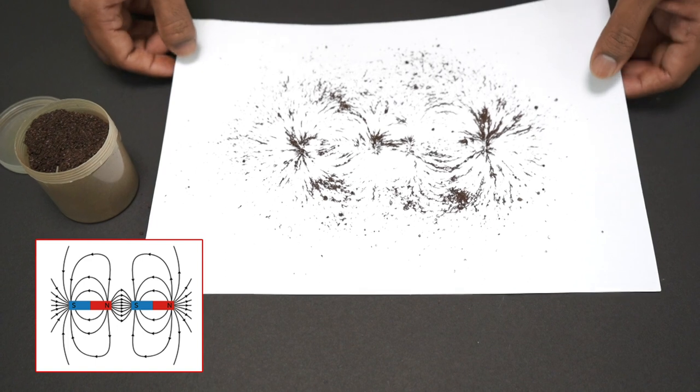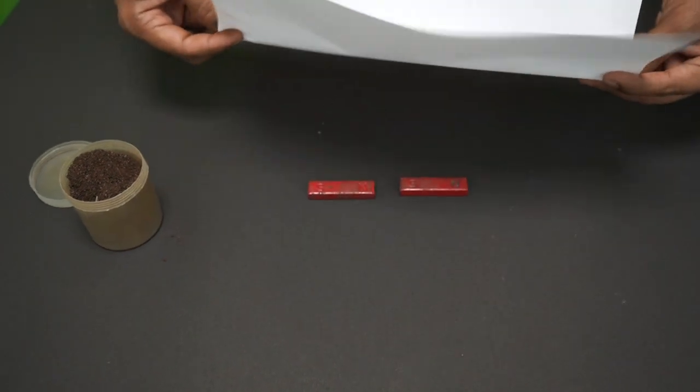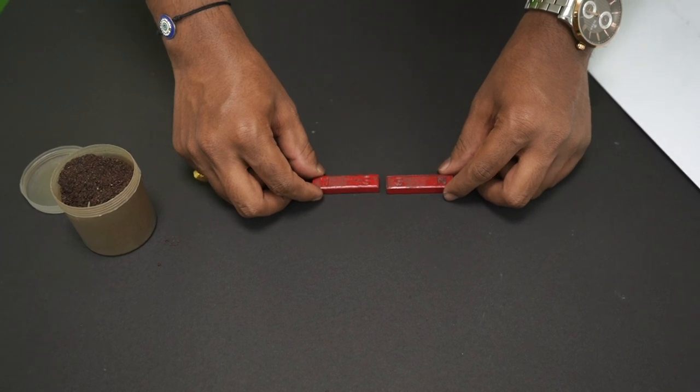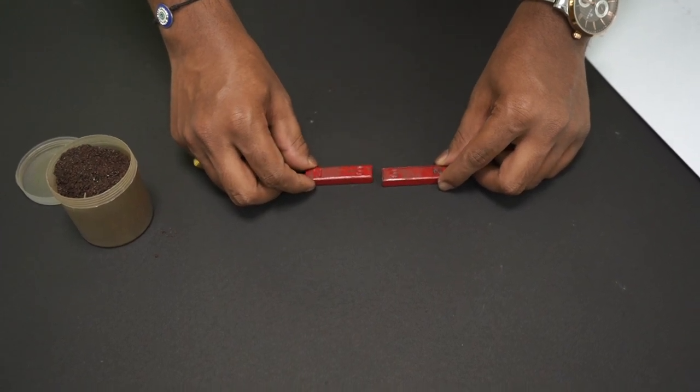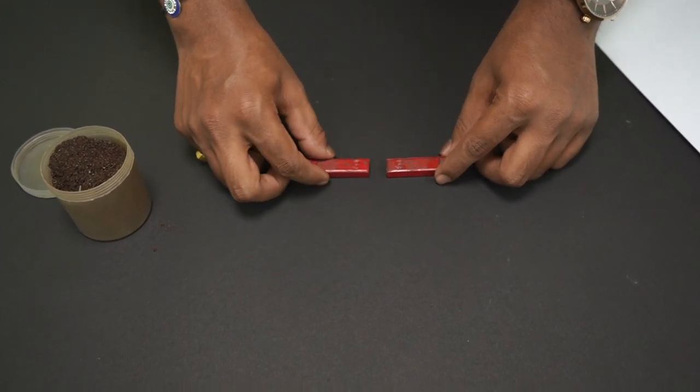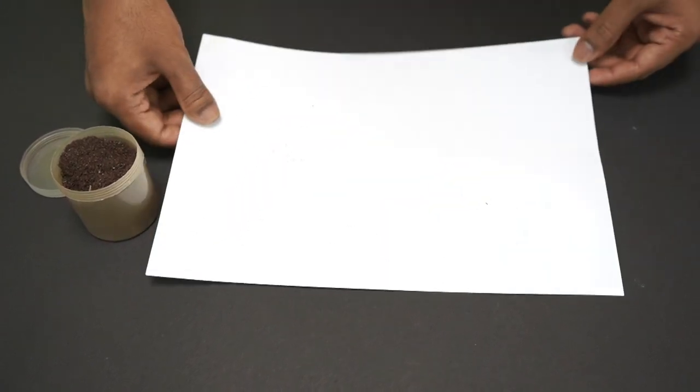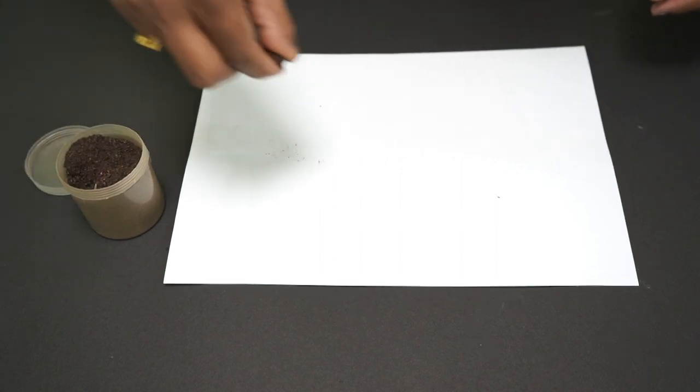So we can have another pattern. Let's do that again. I will arrange the magnet. So there are the two south poles, these are the like poles. And can you see? They are repelling each other, right? Now, if I place again this paper on the top, and I sprinkle iron filings.